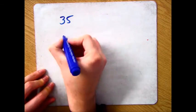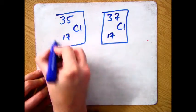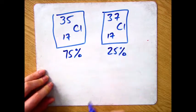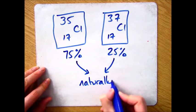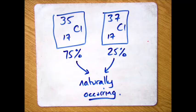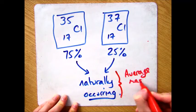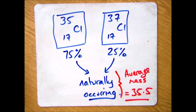The answer is all to do with the abundance, the percentage of each isotope that is naturally occurring, which in this case is 75% of chlorine 35 and 25% of chlorine 37, which gives you an average mass of 35.5 for chlorine.